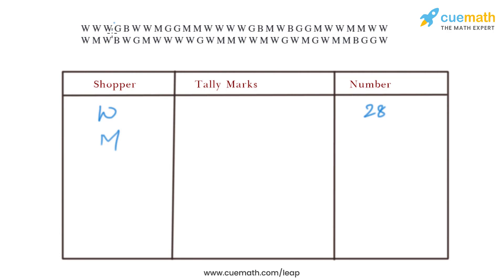Now let's count the number of men in the same way: 1, 2, 3, 4, 5, 6, 7, 8, 9, 10, 11, 12, 13, 14, and 15. So there are 15 men.